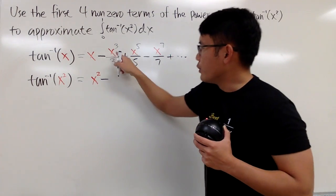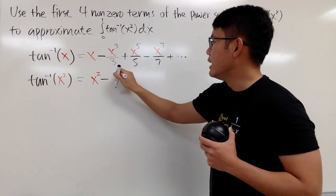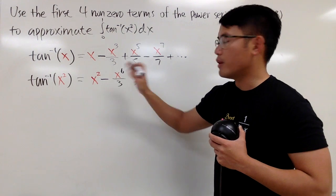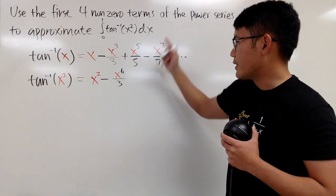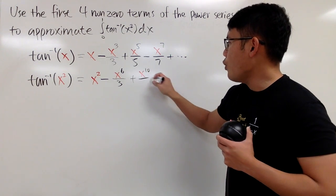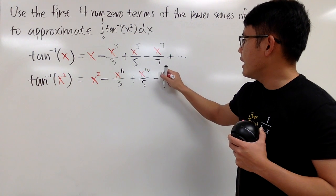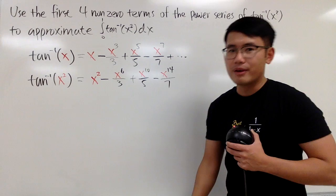Well, if you plug in x squared into here, you raise that to a 3rd power, you multiply the powers, you end up with x to the 6th power, and then this is still over 3, right? And likewise, you put this right here, you get 2 times 5, which is 10, so you have plus x to the 10th power over 5, and then minus, put it here, we get x to the 14th over 7. And let me just stop right here. So I should now use approximation symbol because I'm not going to put on the dot dot dot, alright?